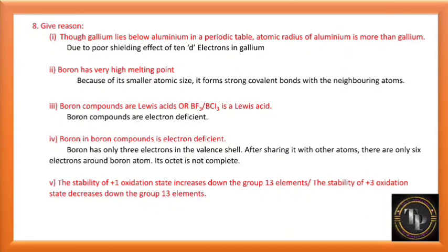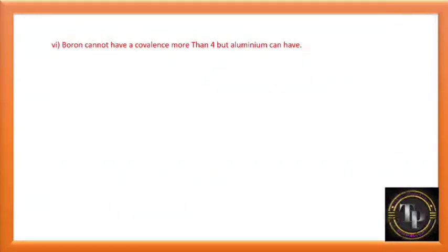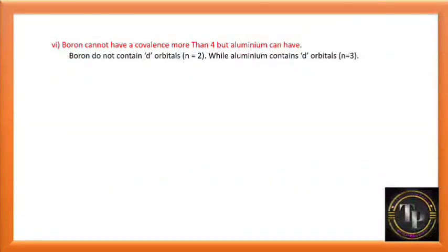The stability of the +1 oxidation state increases down group 13 elements, while the stability of the +3 oxidation state decreases down the group — due to the inert pair effect. Boron cannot have a covalence more than four, but aluminium can, because boron does not contain d-orbitals while aluminium does.